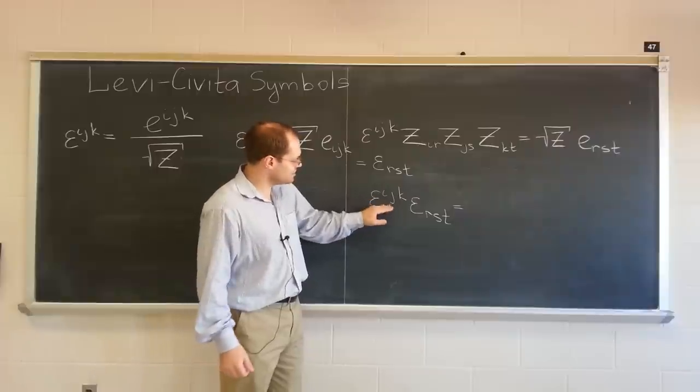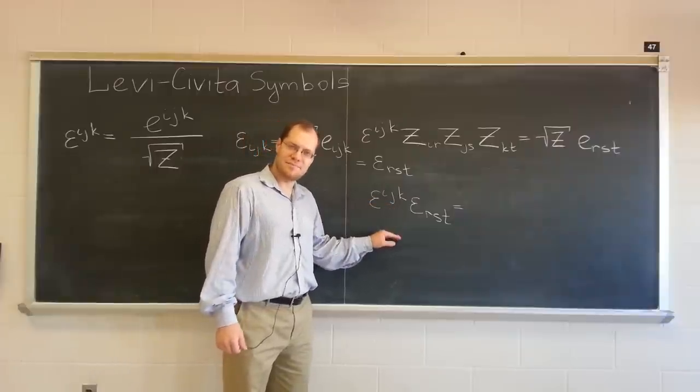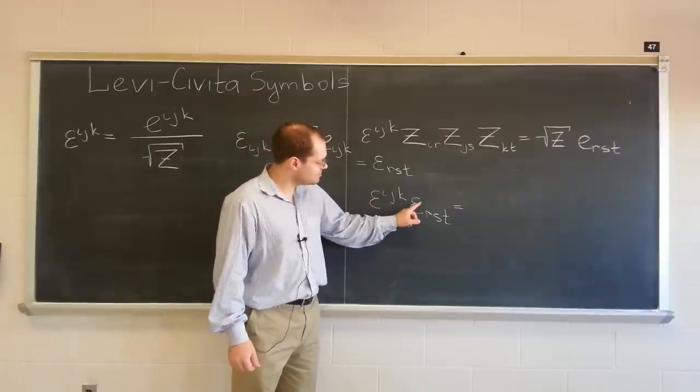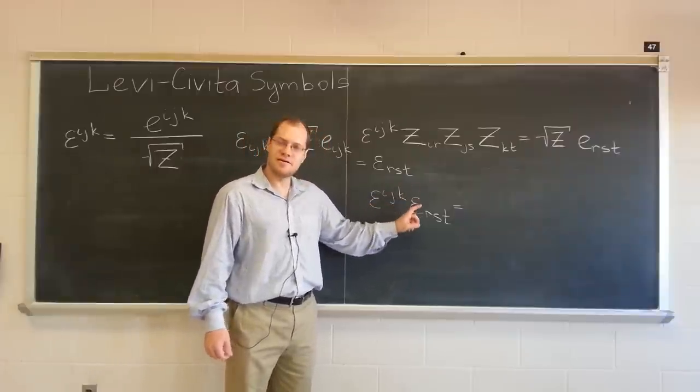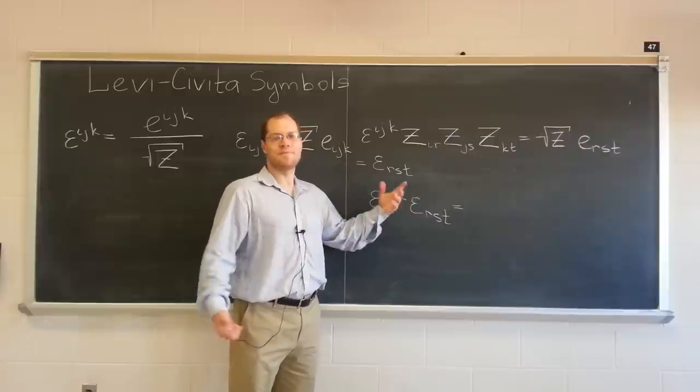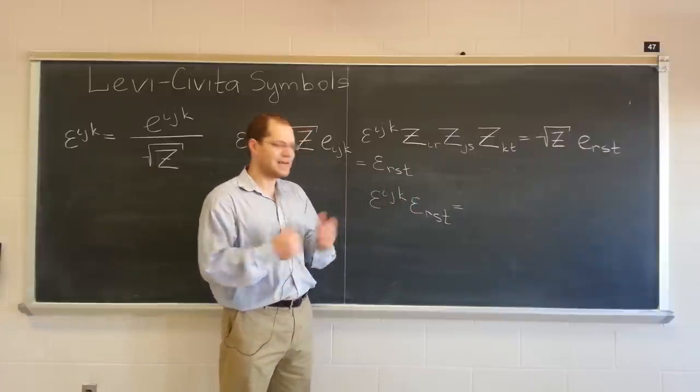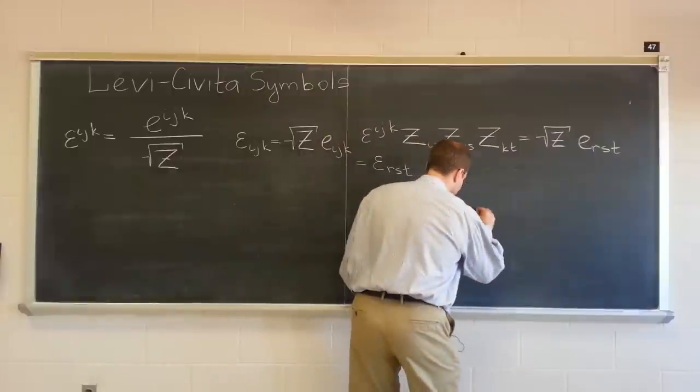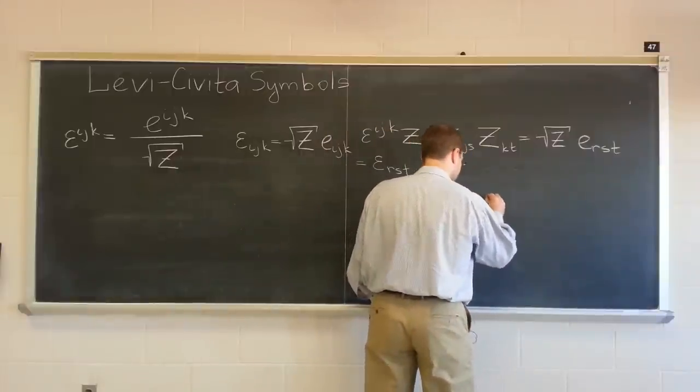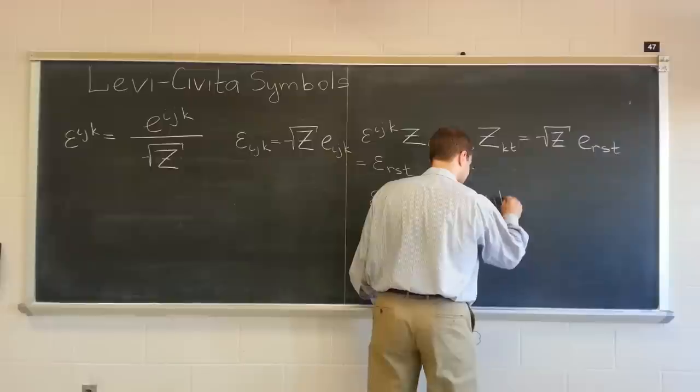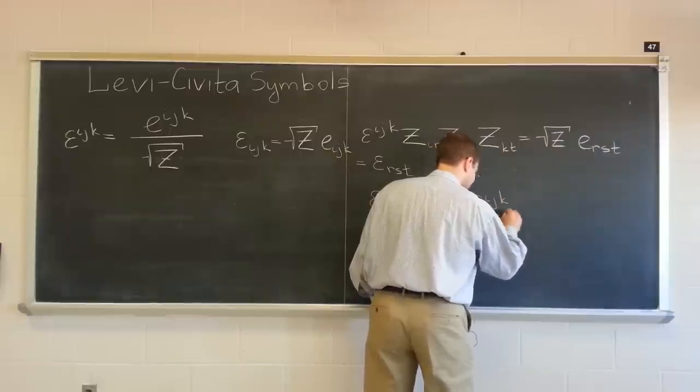This is a permutation symbol with the square root of z on the bottom. This is a permutation symbol with the square root of z on top. They cancel each other. We just have the two permutation symbols. And they combine to produce the delta symbol, which is a tensor, the delta symbol, which is a full tensor.